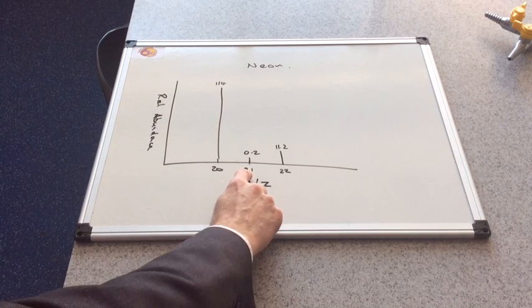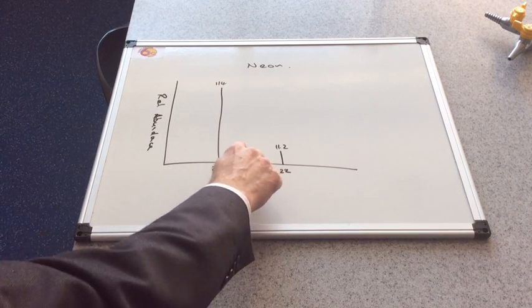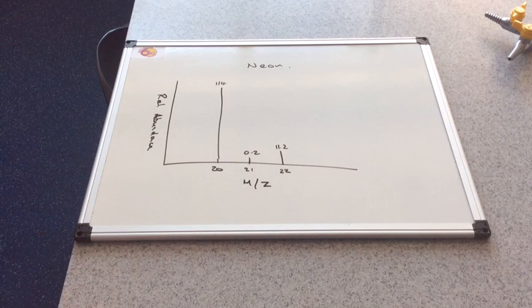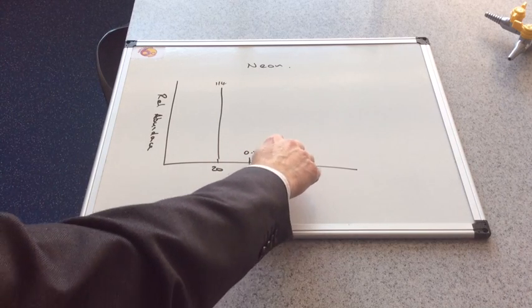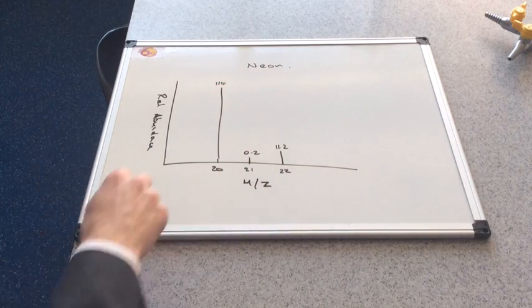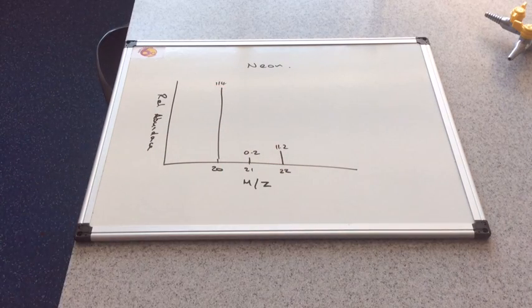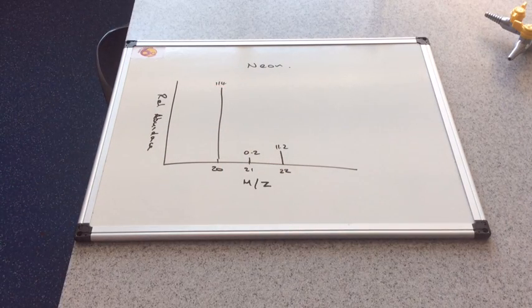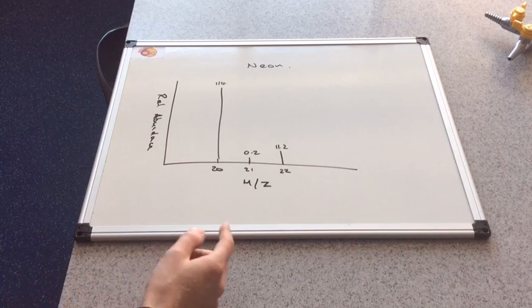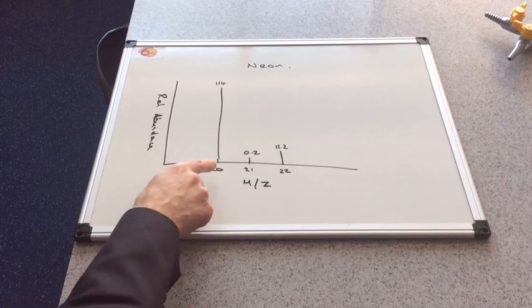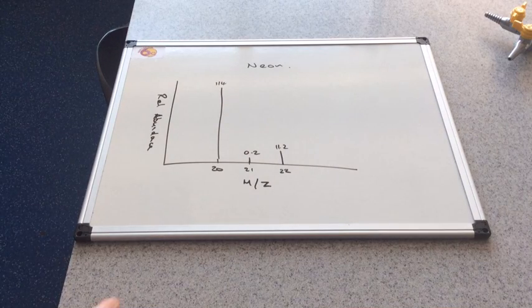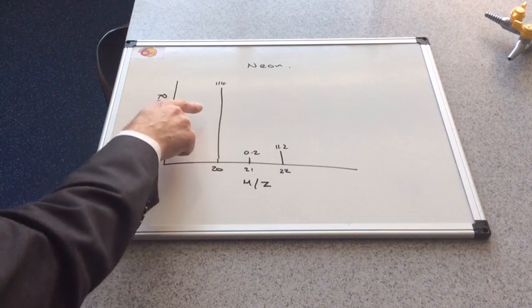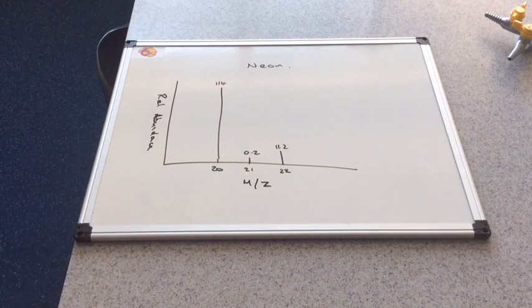Neon 20 has a relative abundance of 114. Isotope 21 has very little, 0.2. Isotope 22 has a bit more but still nowhere near as much, 11.2. Before we go into the calculation, you should be able to see that the answer is going to be closest to the 114 peak, because the weighted mean is going to pull the mean across.